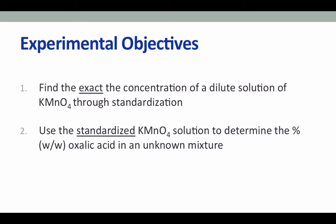There are two major parts to this experiment. In part 1, you will determine the exact concentration of a dilute solution of potassium permanganate through standardization. In the second part, you will use your standardized solution of potassium permanganate to determine the percent weight-by-weight of oxalic acid in an unknown mixture.